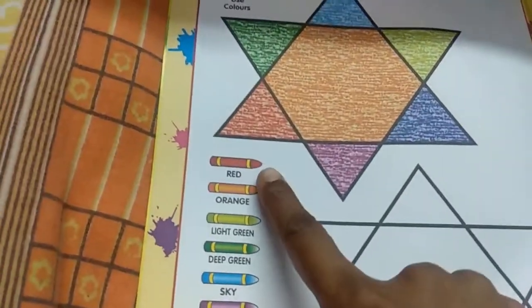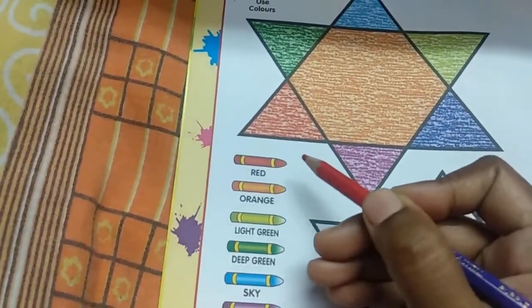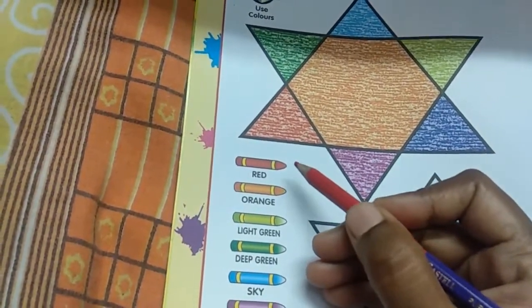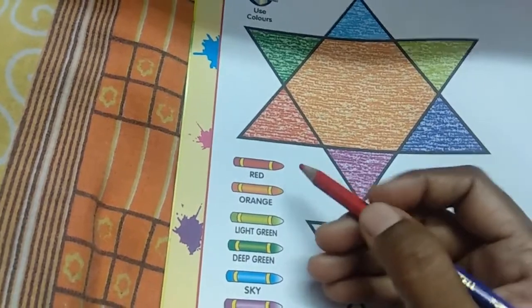See children, this is red color. Red color is of tomato, strawberry and apple.